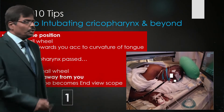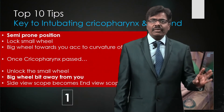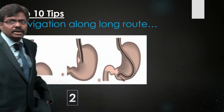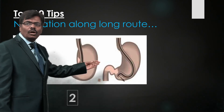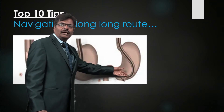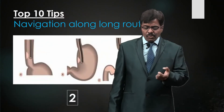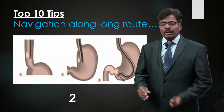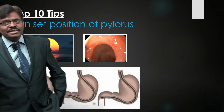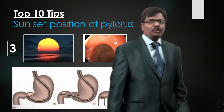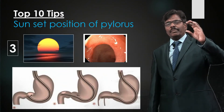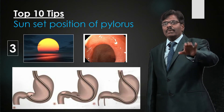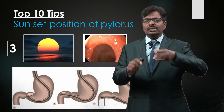These three things will make intubation much easier. What you are seeing is mostly the side wall — you go along the greater curvature, the long route. Then big wheel down and torque to the right — clockwise torque — to see the pylorus in the 'sunset' position: three-quarters of the pylorus visible at approximately 6 o'clock. Straighten the scope and go blindly — another leap of faith — but do not immediately change the wheels; wait until you reach the D1-D2 junction.